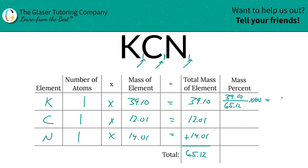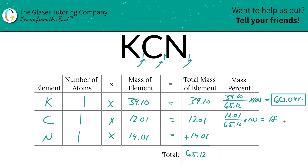So that's going to be 60.04% for potassium. Next, we're going to do the same thing for carbon. We take the total mass of carbon, 12.01, divided by 65.12, times that by 100. And we get 18.44% for carbon.